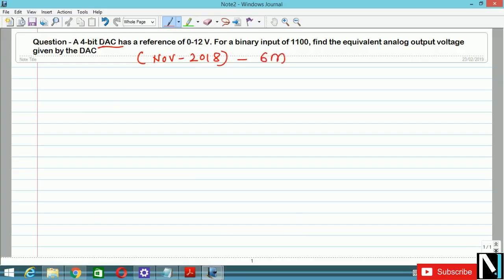The question is like this: A 4-bit DAC has a reference of 0 to 12 volt. For a binary input of 1100, find the equivalent analog output voltage given by the DAC. So first of all we will write down the given things and we'll start with the solution part.